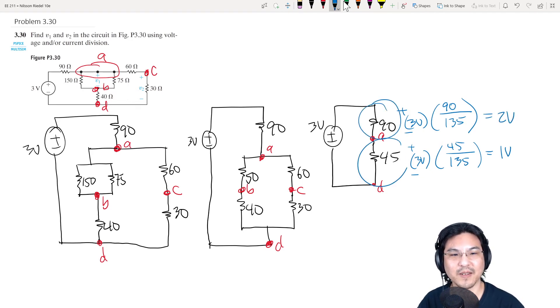Right? So here to here, 2 volts. Here to here, 1 volt. Let me do that again. Here to here, 2 volts. Here to here, 1 volt. Okay, but we're after the voltage here between A and B, which is right here. We need this voltage right here. That's V1.